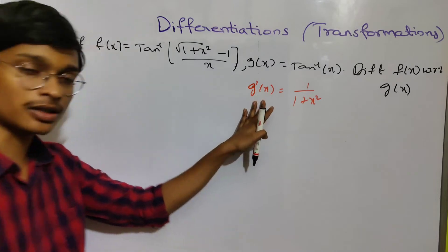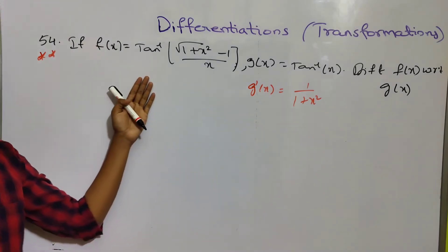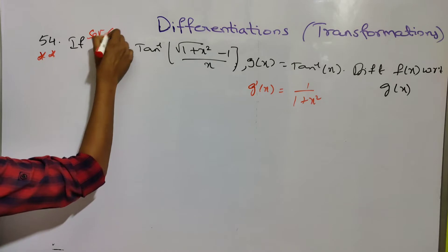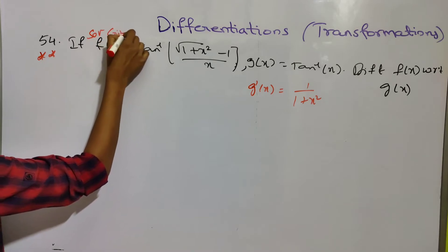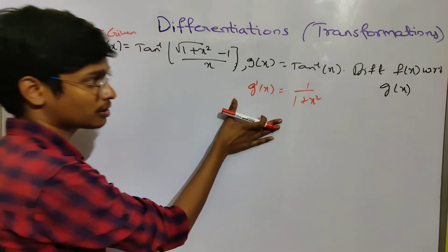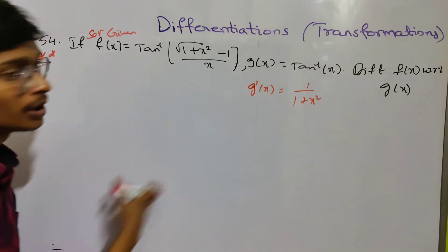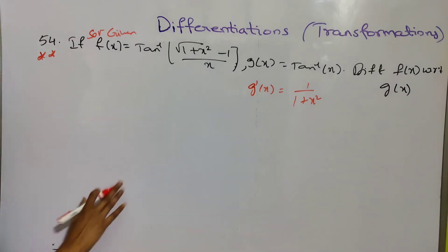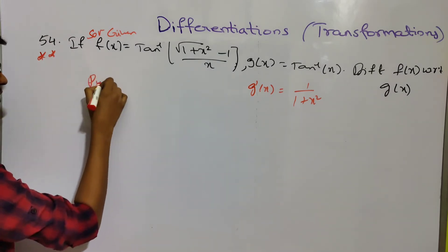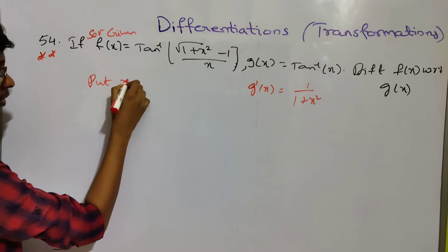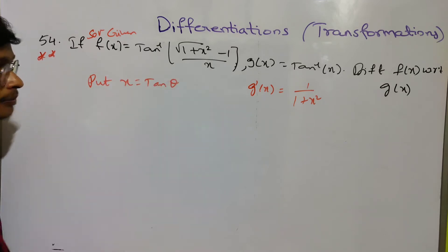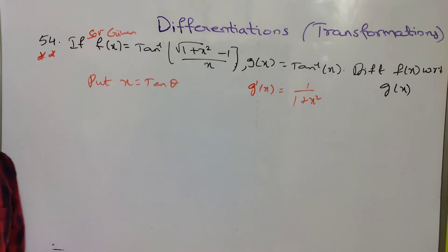We have to find out f prime of x and g of x — this is easy. We have to find out the solution. We have to find out f prime of x and g of x, which makes the problem easy to find out. We have to use the substitution: put x equals tan theta.